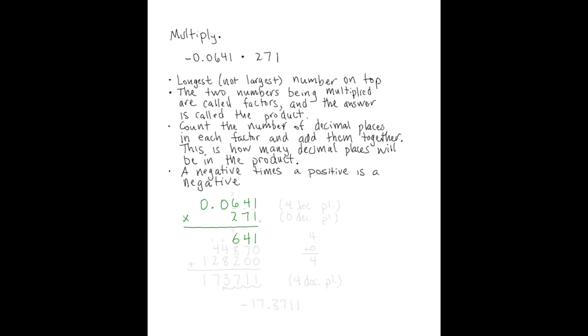So we're through with the 1 in 271, and we're ready to move on to the next digit, which is the 7. But the 7 is in the tens place. To indicate this, we need to use a placeholder 0, which we place right here beneath this 1 in the 641.